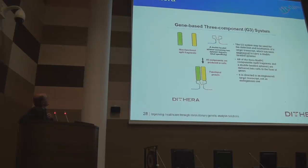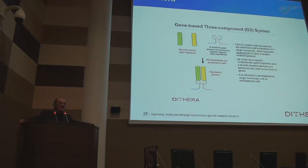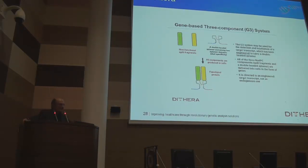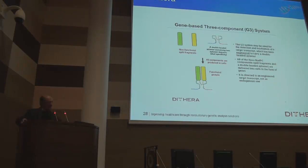I'm going to show you two versions of this system. I need to define one technical term: an aptamer is a sequence that you can select by evolutionary tricks that tightly binds a target. Aptamers can be proteins or nucleic acids; in this case our aptamer is an RNA sequence. If I have an aptamer with two functional parts, I can use it to detect and bind simultaneously two halves of a protein, forcing those two halves to come back together, and that's going to give me a signal.